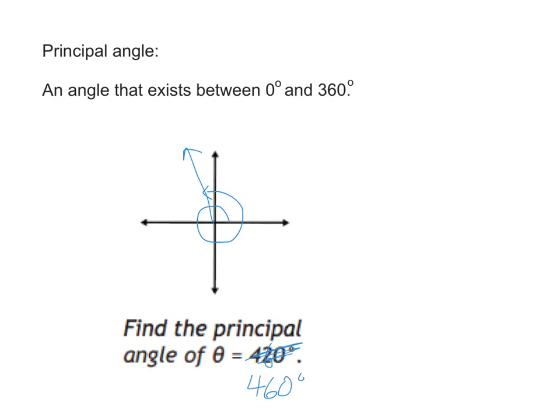So it's this angle is 460 there, all the way around to there. What is the principal angle for that one? 100, right. I'm going to call it theta P for principal. That's 100.